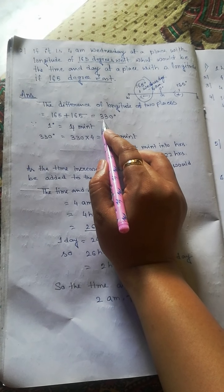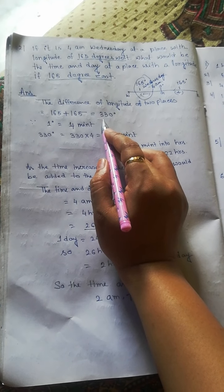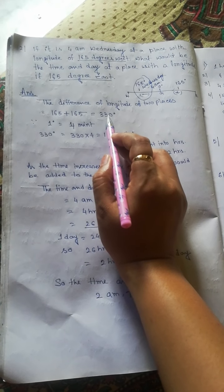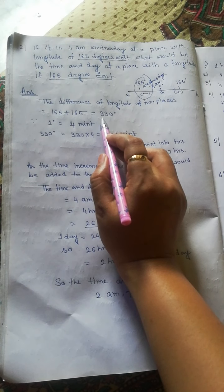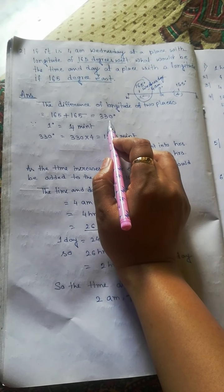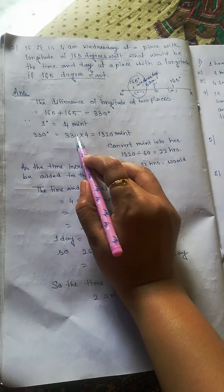So if we add them, the total degree is 330 degrees. And now what do you do next? You have to convert this degree into minutes. You know one degree equals to 4 minutes, so 330 degrees times 4 equals to 1320 minutes.